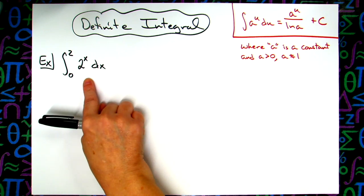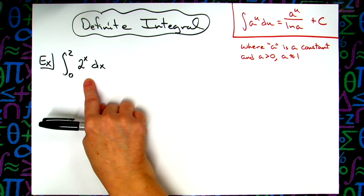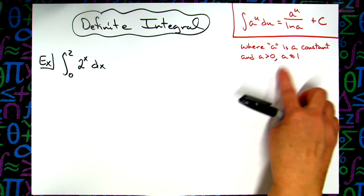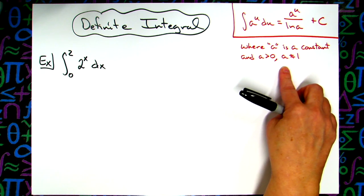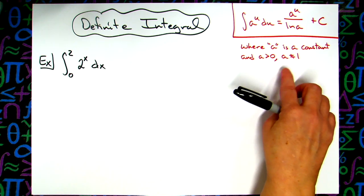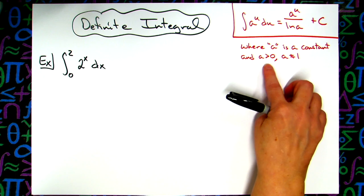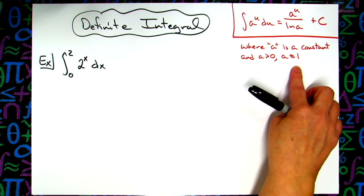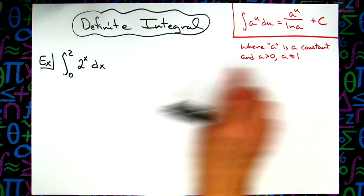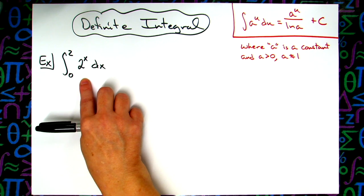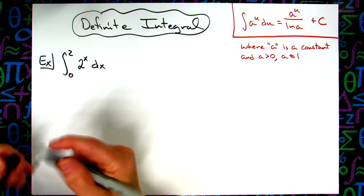Now to be able to integrate this — that would be the first step — you are going to need to know this formula. The integral of a to the u du is equal to a to the u over the natural log of a, as long as your a is a constant, and the a value is at least greater than 0 and not ever equal to 1, which is our case here. We're greater than 0 and that doesn't equal 1, so this formula is going to work.